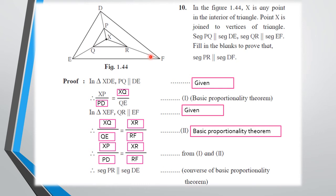Note that there is a typing error in this textbook — they wrote segment PR is parallel to segment DE, but it should be DF. That is what we had to prove, and according to the diagram it is PR parallel to DF, not DE. The reason given is the converse of the basic proportionality theorem. If you don't understand the proof, pause the video and go through it again. Please note the typing error: it is DF, not DE.